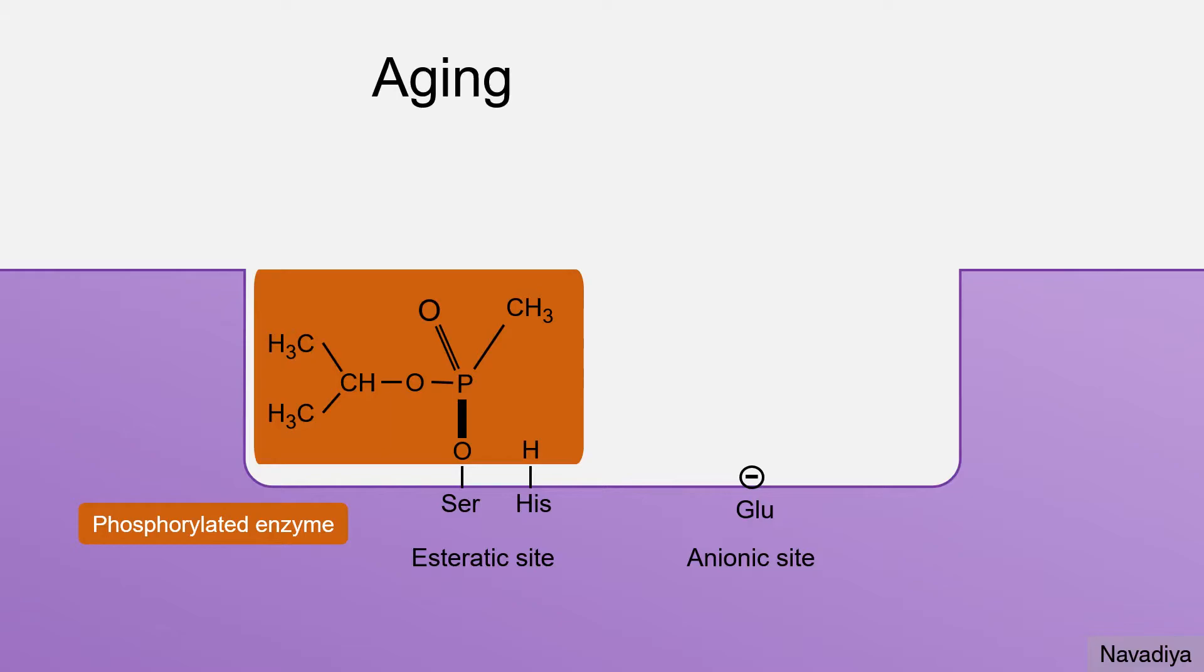On top of it, over a period of some time, this complex may lose alkyl group which further strengthens the bond. This process is called aging and it makes enzyme completely resistant to hydrolysis. Time for aging varies among different organophosphates. Some drugs undergo aging within few minutes whereas others take hours.